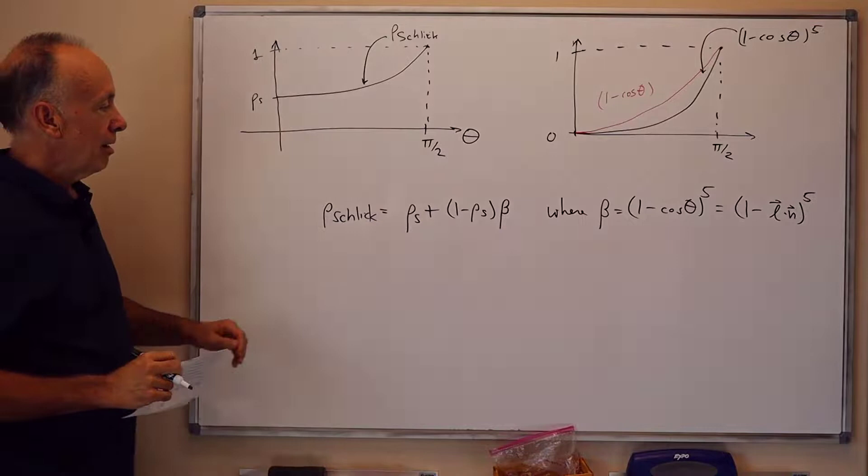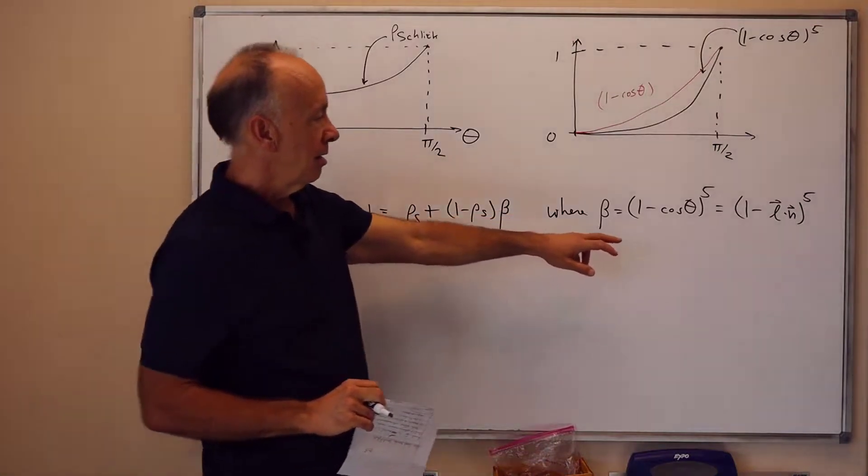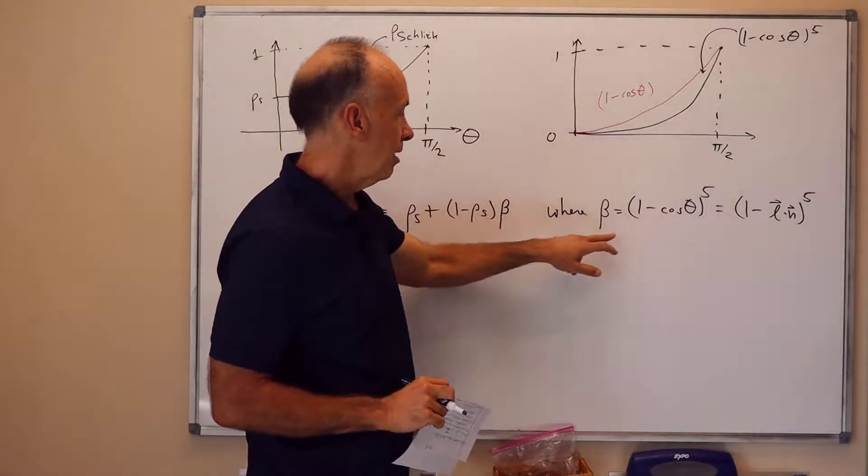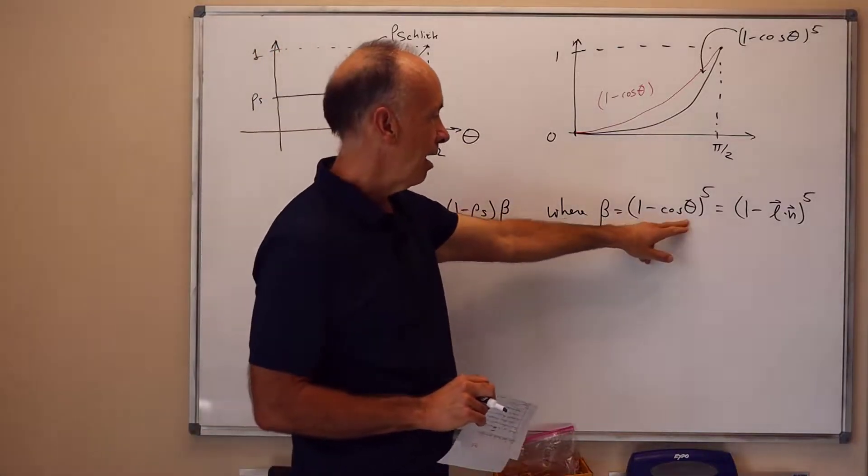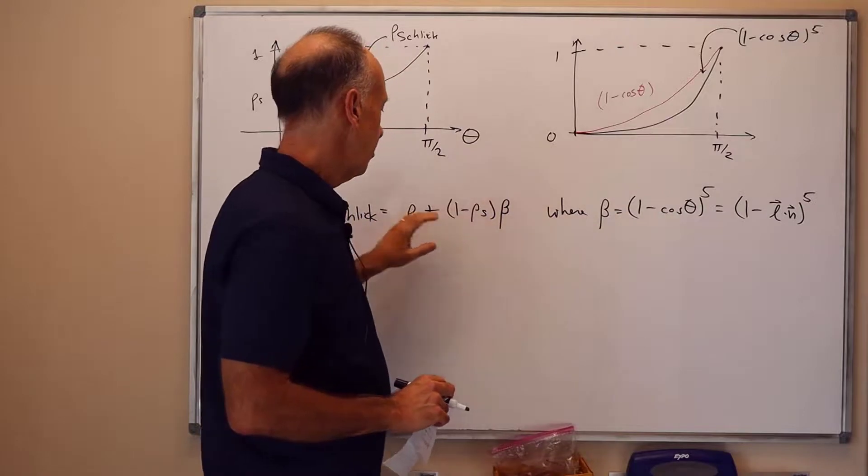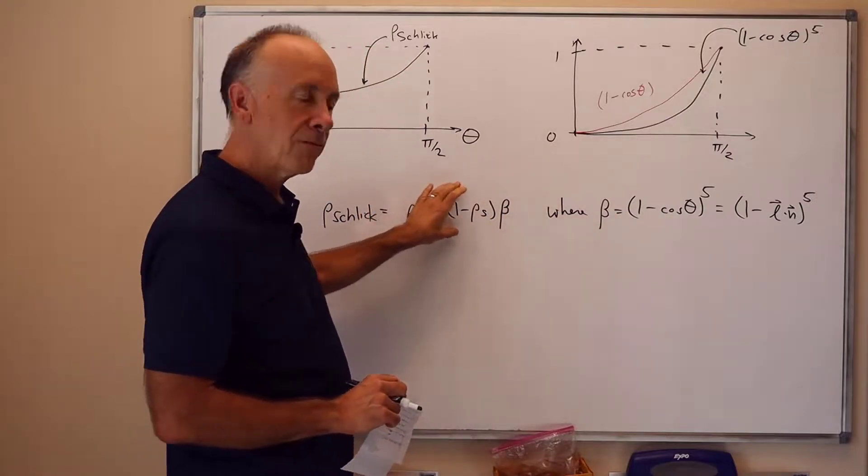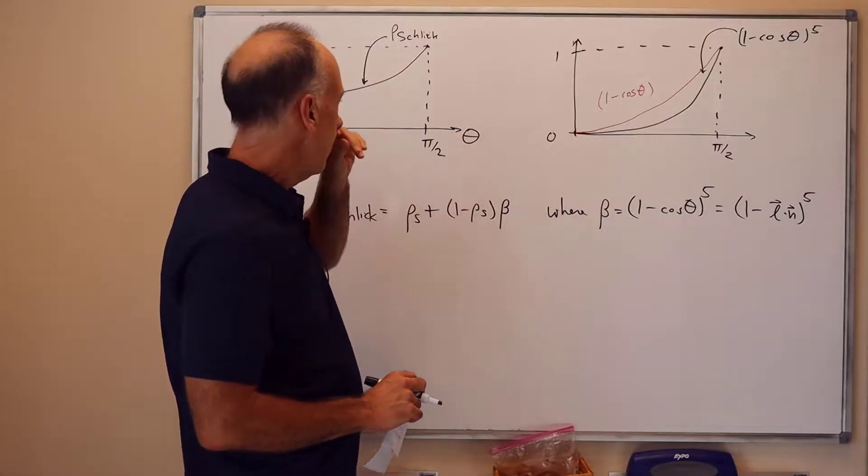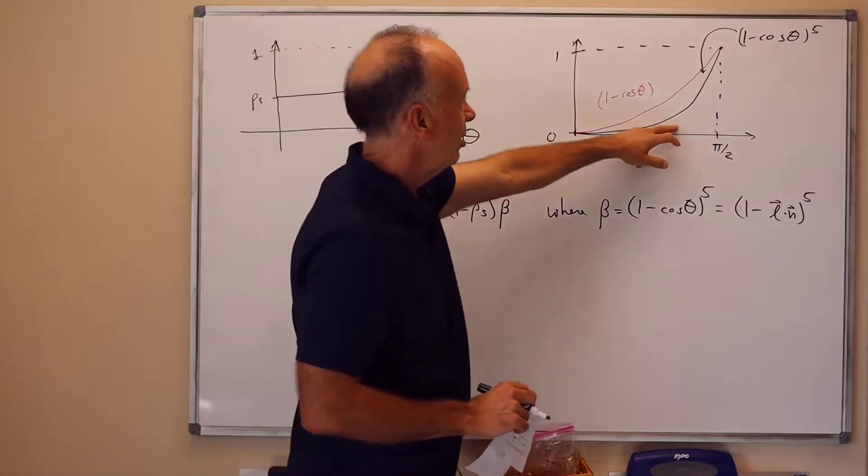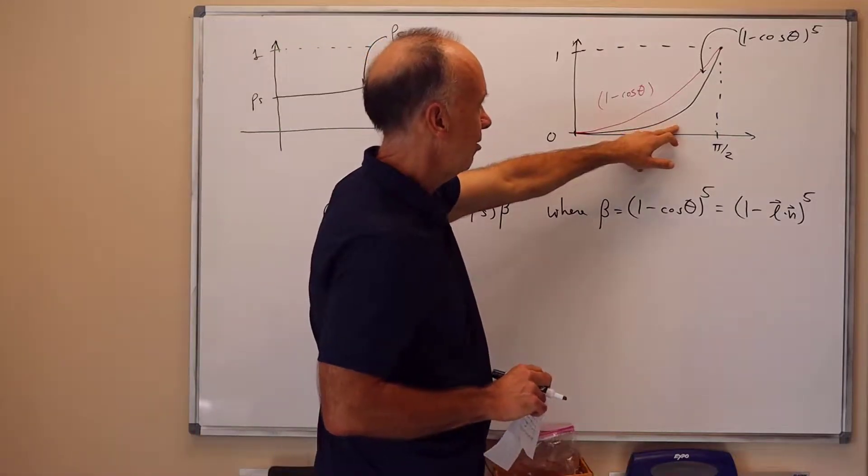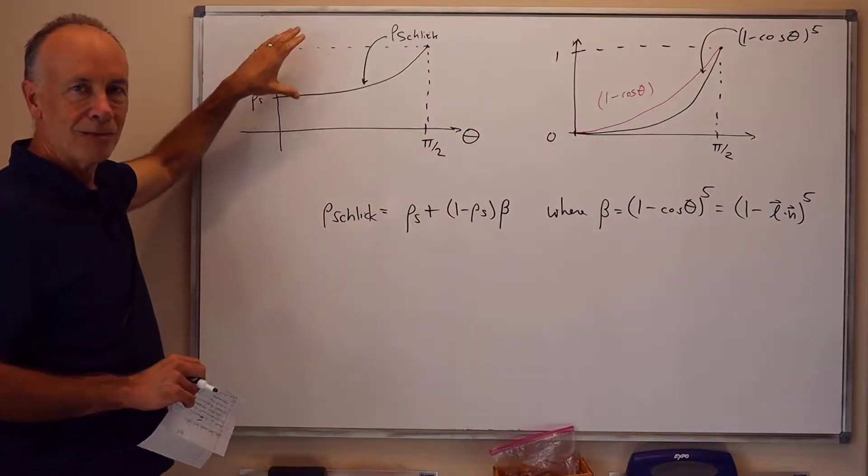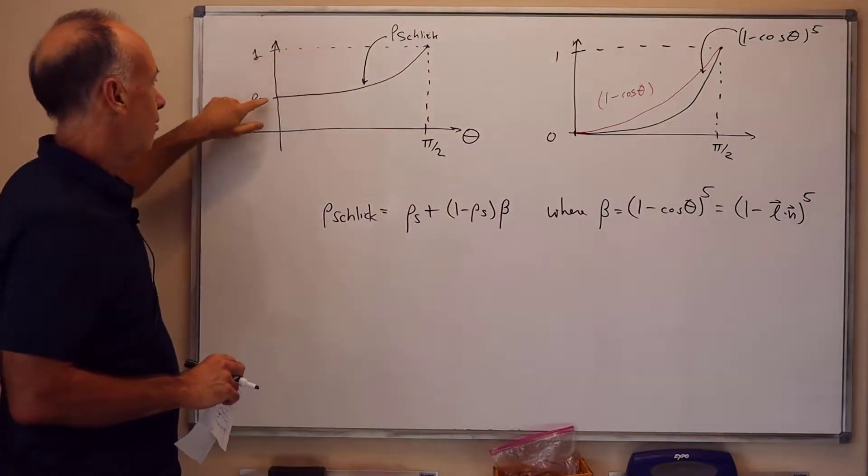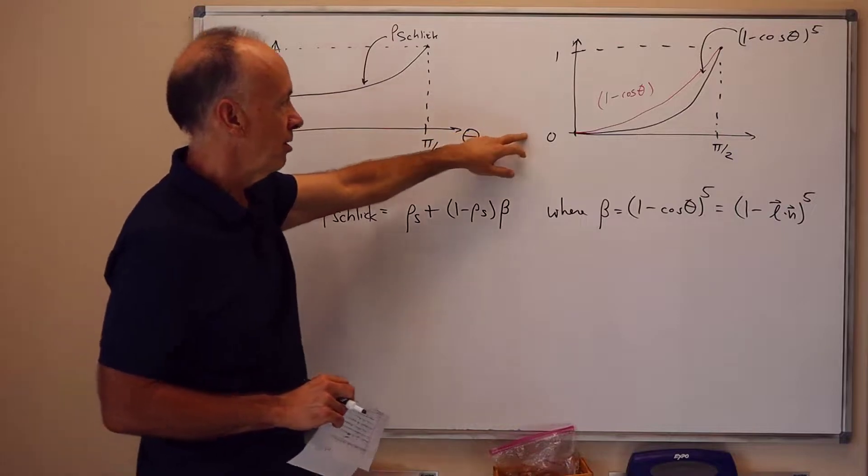So, you can see what happens when theta is 0, beta is 0, so Rho-Schlick is just rho s. When theta is pi halves, beta is 1, so Rho-Schlick is rho s plus 1 minus rho s, or just 1. And the transition, this shape of the curve, 1 minus cosine theta to the 5th, is the same as the shape of this. This has just been scaled down to go from rho s to 1, instead of going from 0 to 1.